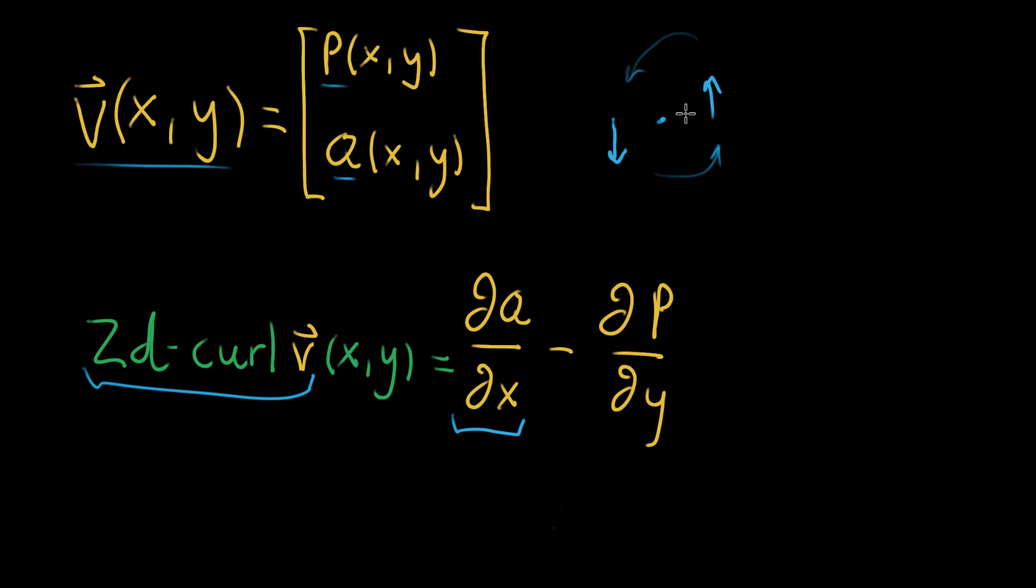But this is only a very specific circumstance for what partial Q partial x being positive could look like. It might also look like Q starting off a little bit positive, and then as you move in the x direction, it becomes even more positive, and then even more positive. And according to the formula, this should contribute as much to positive curl as this very clear cut kind of whirlpool example.